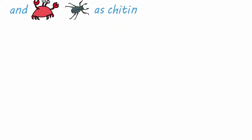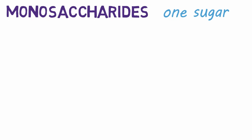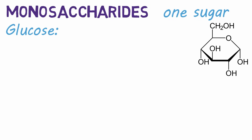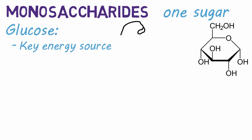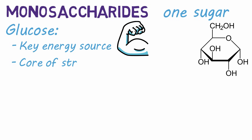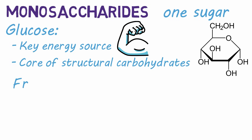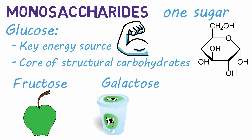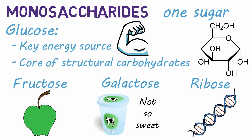The simplest form of carbohydrates are called monosaccharides. Mono means one and saccharide means sugar, so a monosaccharide is a single carbohydrate molecule. Examples include glucose, an important simple sugar that is a key energy source in living organisms and the core of many structural carbohydrates; fructose, the sugar found in many fruits; galactose, a sugar found in yogurt and less sweet than fructose and glucose; and ribose, a monosaccharide that helps form DNA.